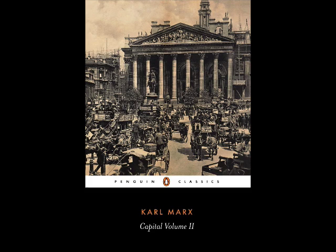Section 1. First Stage, M to C. M to C represents the conversion of a sum of money into a sum of commodities. The buyer transforms his money into commodities; the sellers, their commodities, into money. What makes this particular act of commodity circulation a part of the whole process with a well-defined function in the independent circuit of an individual capital is not primarily the form of the act, but rather its material content, the specific use character of the commodities that change place with the money.